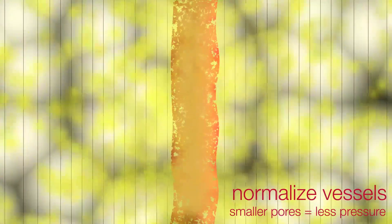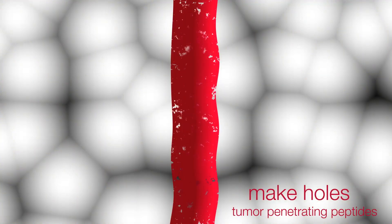One way to do this is to help vessels return to their normal state using anti-angiogenic drugs. Normalized vessels have smaller pores, which limits pressure buildup. Smaller pores, however, tend to block larger nanoparticles from exiting the vasculature, so there's a bit of a trade-off there.